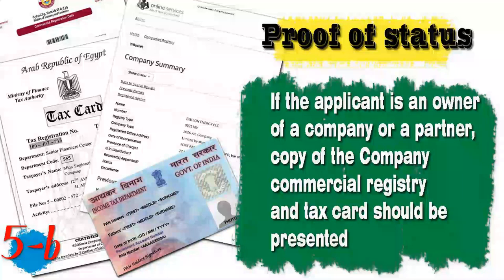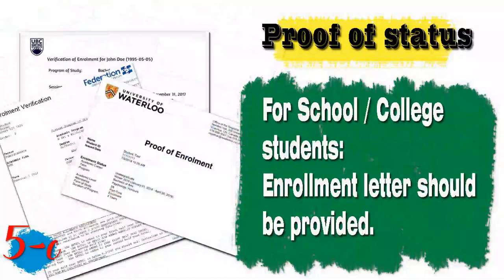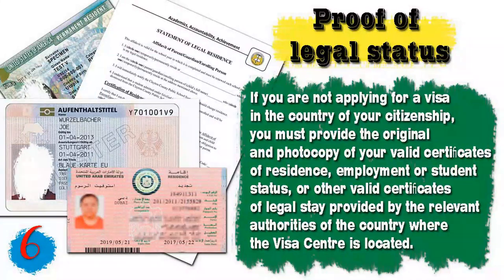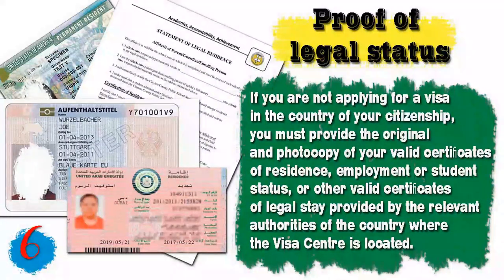Number five: proof of status. If you are an employee, you need a letter from your employer or HR office stating your designation, date of employment, salary, period of stay, purpose of visit, and financial arrangements — the letter must have an original signature and stamp. If you own or are a partner in a company, provide a copy of the commercial registry and tax card. If you are a student, provide an enrollment letter.